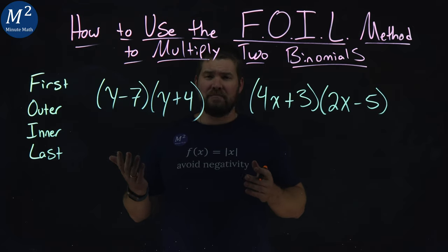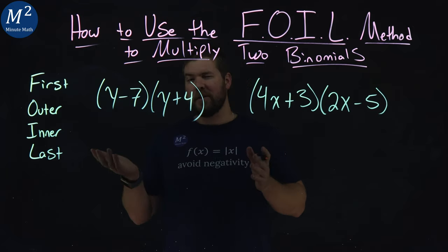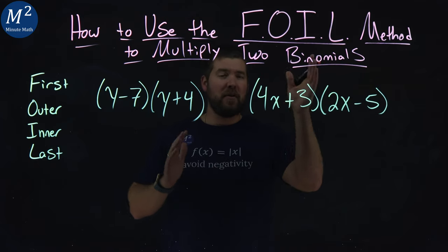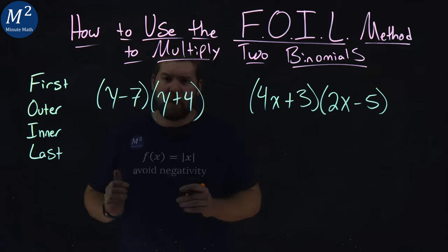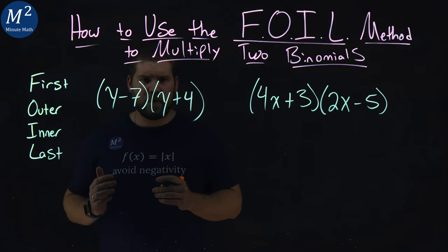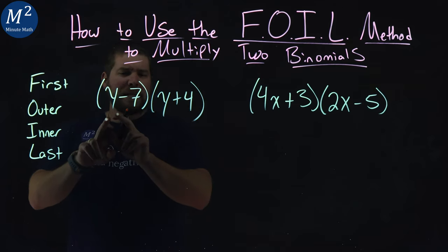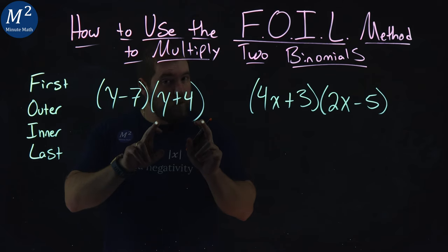You'll sometimes hear people say, just FOIL it, and that's really kind of wrong. We're just using that method, but we're multiplying binomials here. So let's deal with the first one. Let's use the FOIL method. We have y minus seven times y plus four.